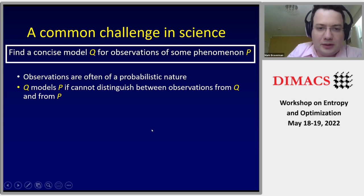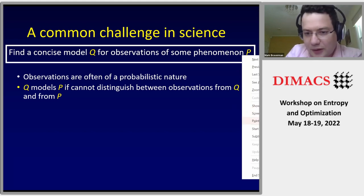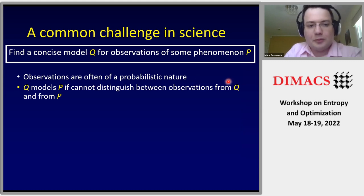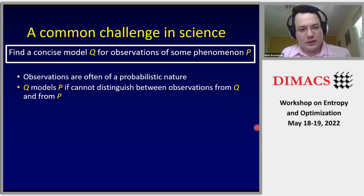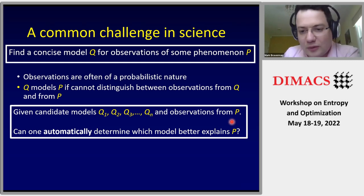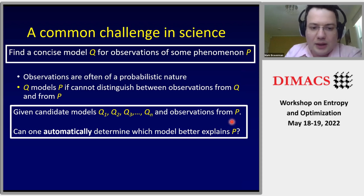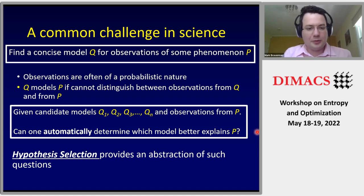The problem we are looking at is hypothesis selection. We have some observed phenomenon p and we would like to build a concise model for it. We get some probabilistic observations and we say that a model q is a good model for p if we cannot distinguish observations from q from observations from p. We have n candidates — think of n as large — and we would like to automatically determine which model better explains p. This is the hypothesis selection problem.